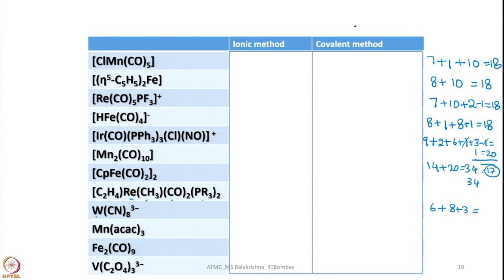Continuing with covalent method: 6 cyanate ligands give 8 electrons; adding 3 for the negative charges gives 17 electrons. Verifying with ionic method: 6 electrons from metal, 3-minus charge, and cyanates as 2-electron donors. For an ACAC complex of chromium: 7 electrons from Cr, and ACAC gives 3 electrons each, so 9 electrons from three ACAC ligands gives 16 electrons total.